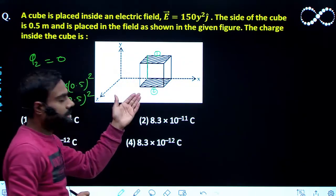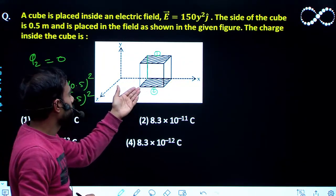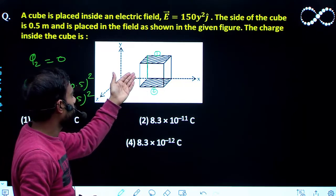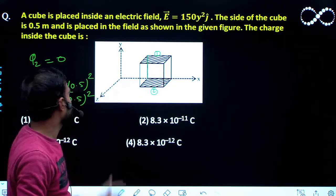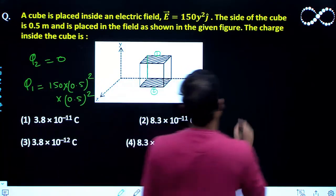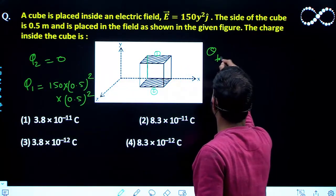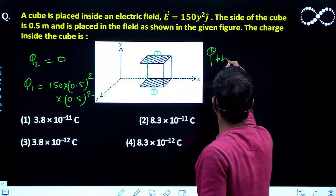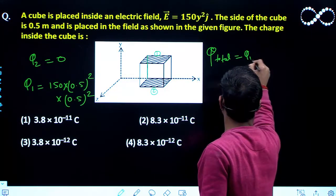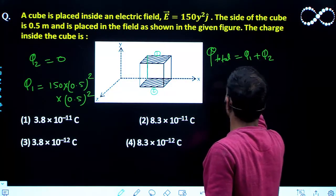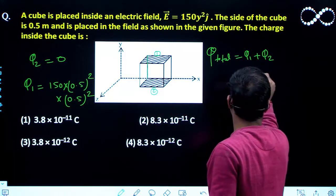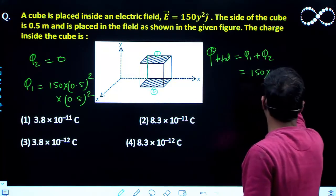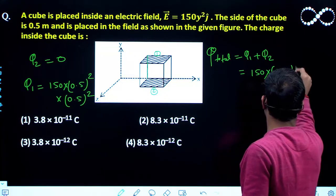For all other surfaces the flux will be 0 because the angle between electric field and the area vector will be 90 degrees. So for all other surfaces the flux will be 0. So I can see from here the total flux, that is phi total, is equal to phi 1 plus phi 2 and that will be equal to 150 into 0.5 raised to power 4.